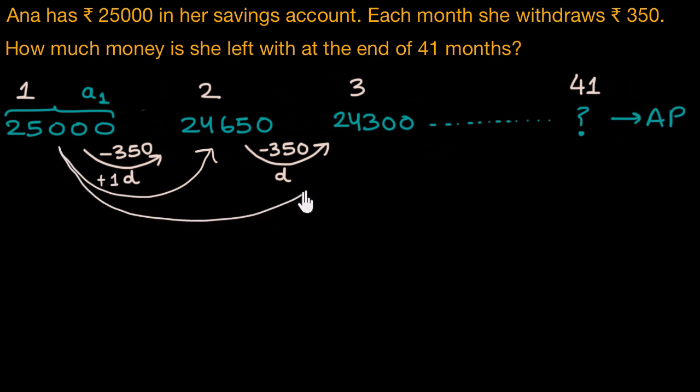to get to our third term, we had to add this common difference twice. So, by adding this common difference twice to our first term, we get the third term.